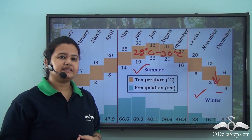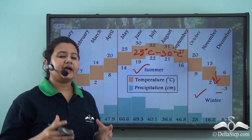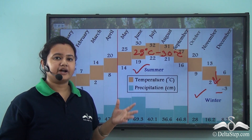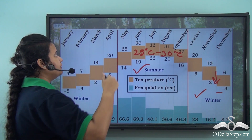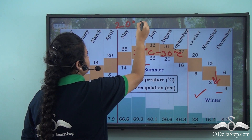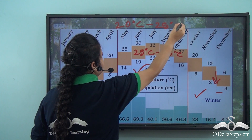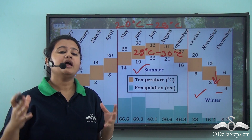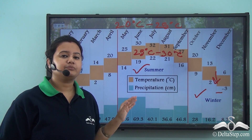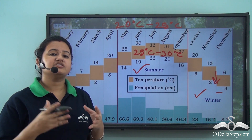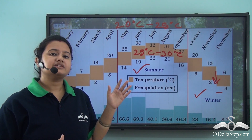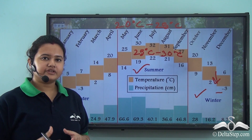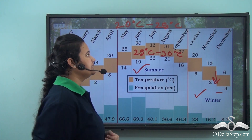There are wide variations in summer and winter temperatures, so the mean annual range of temperature of this biome is very high, ranging from 20 to 25 degrees Celsius. Mean annual range of temperature refers to the difference between summer and winter temperatures.